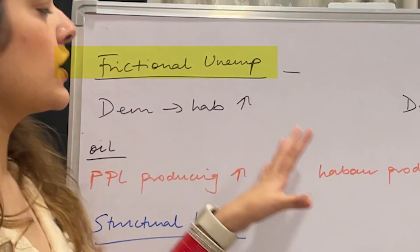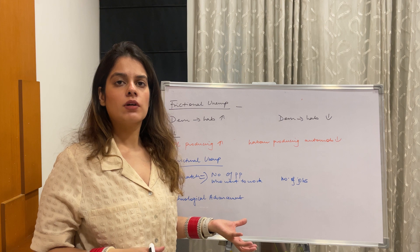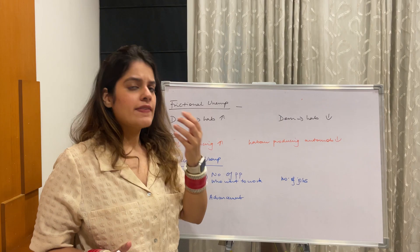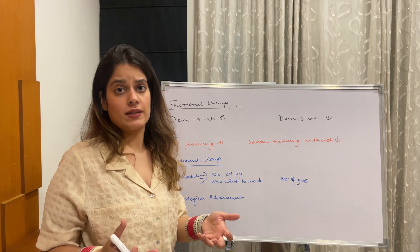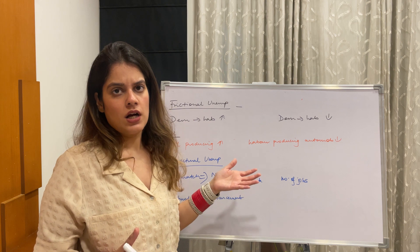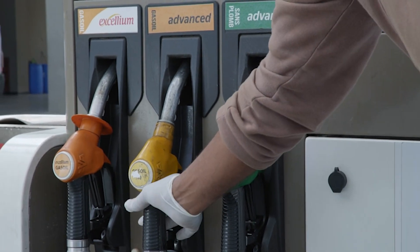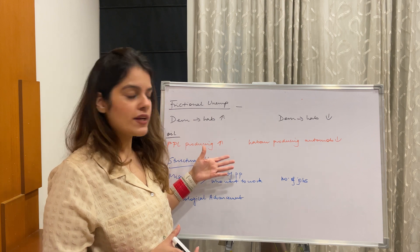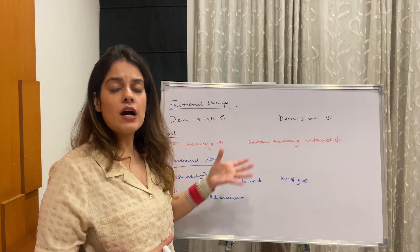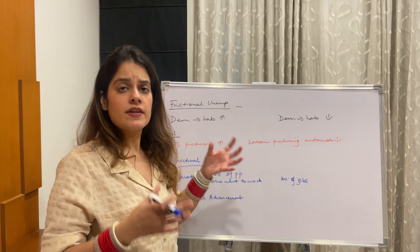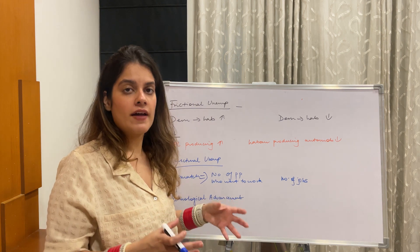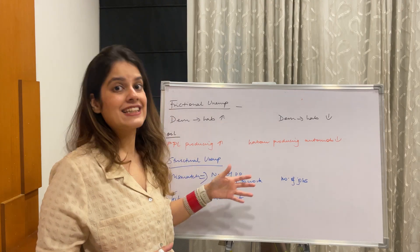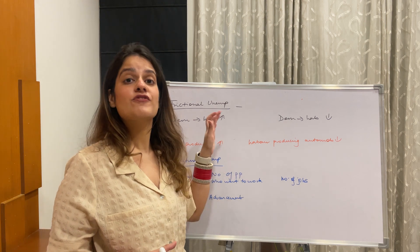First, let's look at frictional unemployment. Sometimes when a good is being produced, the demand for labour might rise in one place while it falls in another. For example, when demand for oil is very high, more workers are needed in oil production. But since oil becomes expensive, driving cars becomes costly, the demand for the automobile industry falls, and labour in that sector loses jobs. This type of unemployment is known as frictional unemployment.